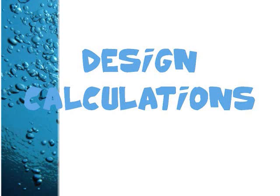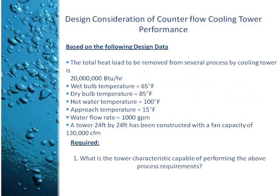But first, we will test its efficiency by solving problems using numerical integration and the Chebyshev method. We are given with the following process requirements. First is the total heat load to be removed from several processes by the cooling tower, which is 20 million BTU per hour. The wet bulb temperature is 65 degrees Fahrenheit, which is the non-equilibrium temperature at which a small amount of water comes into contact with a continuous stream of gas. The dry bulb temperature, or the actual gas temperature, is 85 degrees Fahrenheit, and the hot water temperature is 100 degrees Fahrenheit.